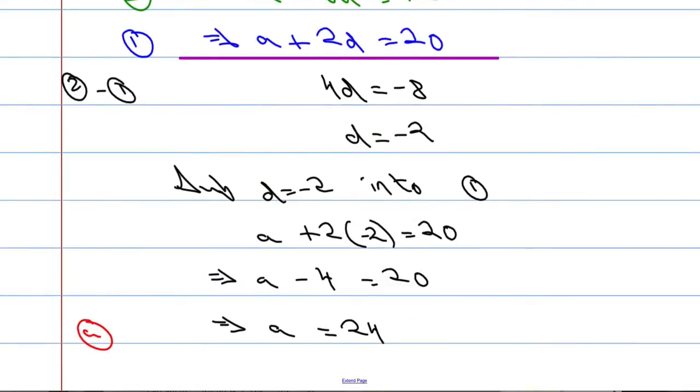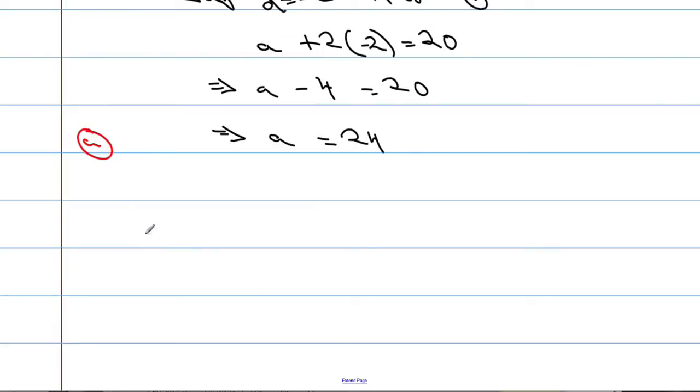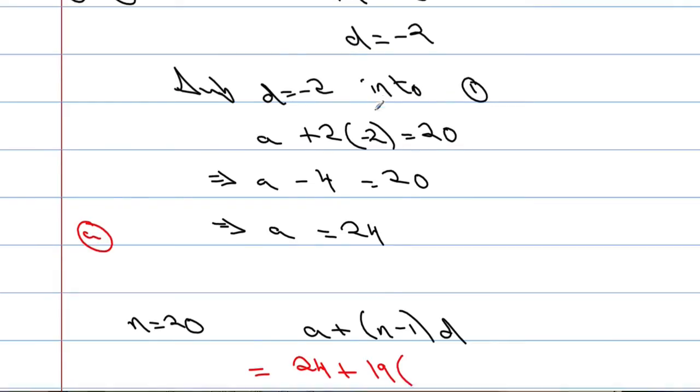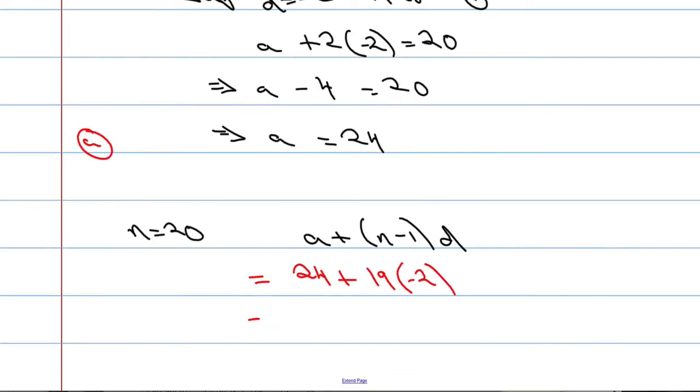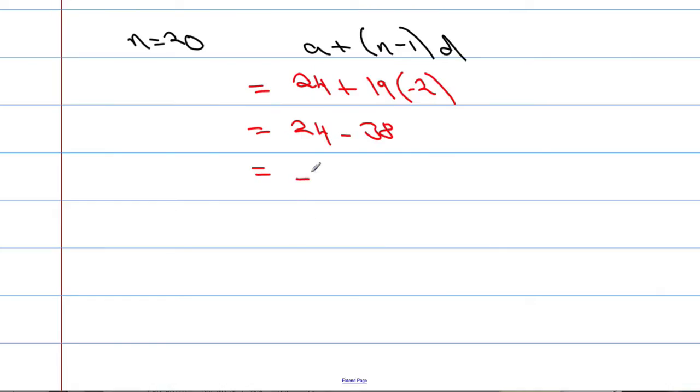Part B: Find the 20th term. That means N will be equal to 20. Let's use the formula A plus N minus 1 times D. So 24 plus 19 times D. D is negative 2. 19 times negative 2 is negative 38. When we take 38 away from 24 we get negative 14. So the 20th term is negative 14. That's one application of the formula.